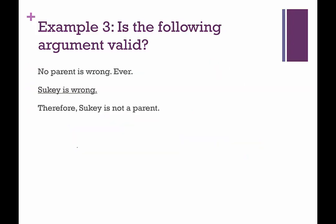How about this one? Example three. And if you're a parent, you understand where I'm coming from here. No parent is wrong ever. So this is no, no parent, and it's saying something they're not. So we're going to have people who are wrong, I'm going to say wrong people just because that's shorter. We have wrong people, and then we have parents over here. Okay, so that's our first premise breaking that one down. Premise two, Suki is wrong, so Suki is going to go right here in the wrong people category. Then is it fair to conclude, therefore, Suki is not a parent. Suki is over here, nowhere near the parent set, so yes, this is a valid argument.